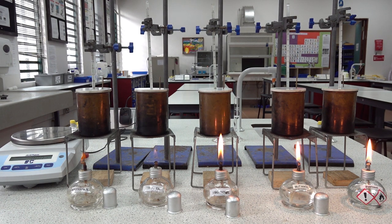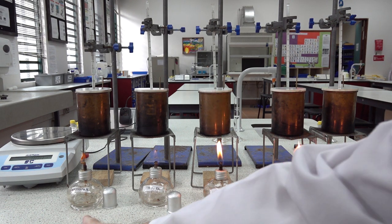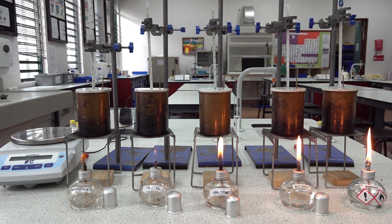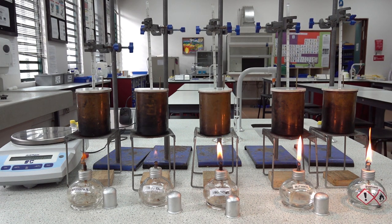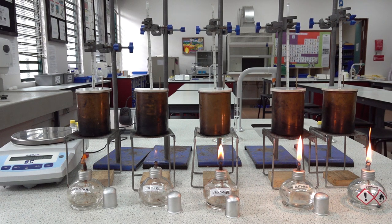The enthalpy of combustion of alcohols: in each of the five burners we've got an alcohol - methanol, ethanol, propanol, butanol, and pentanol. In each of the five copper calorimeters we have 120 centimeters cubed of water. What we need to do is record the mass of the alcohol burners before and after heating the water, and also the temperature rise on the thermometer.